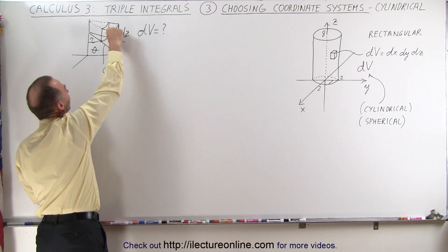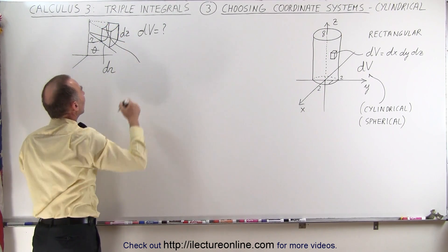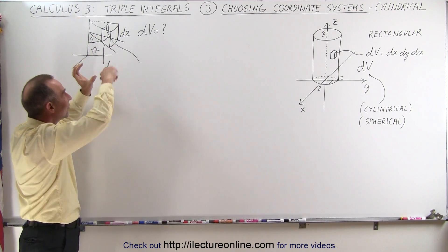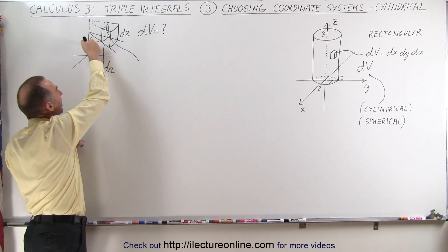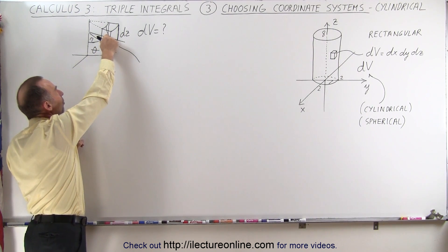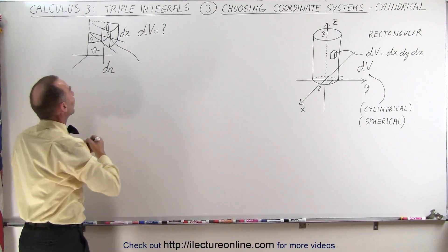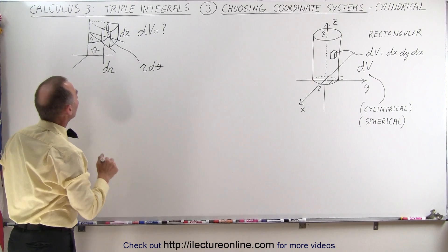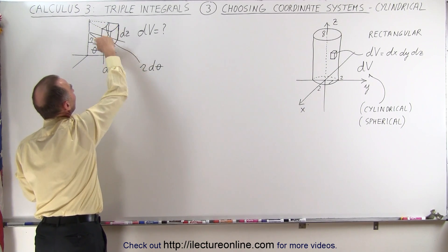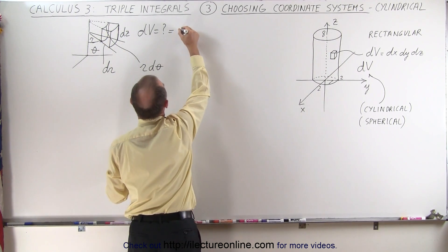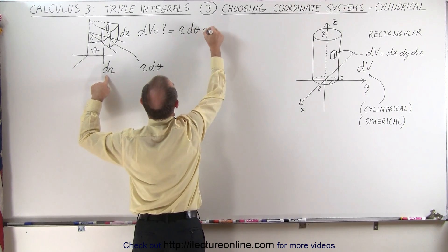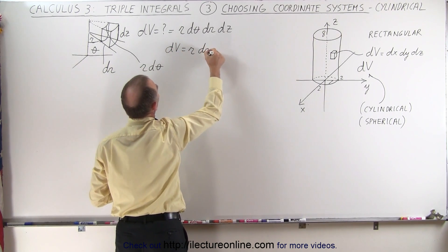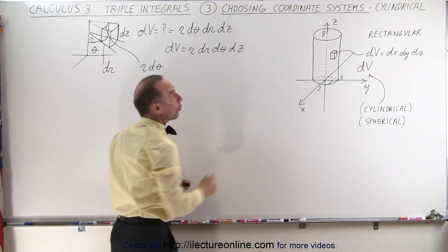What about the curved distance along the arc? That's kind of like the arc of a circle, and the arc of a circle can be calculated by taking the radius times the angle. If the angle from our reference point is theta, then the small change in angle is d theta. So this arc length would be r times d theta. The product of those three distances gives us dv, so dv equals r times d theta times dr times dz, or more typically written as r dr d theta dz.